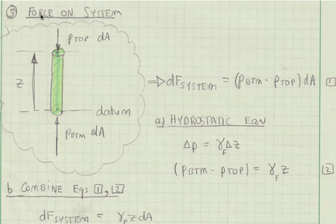Step 3 is to find the external pressure force on my system. The force on the bottom of my system is the pressure on the bottom times dA. Similarly, the force on the top is p top times dA. The net pressure force on the system is pressure on the bottom minus pressure on top times dA.